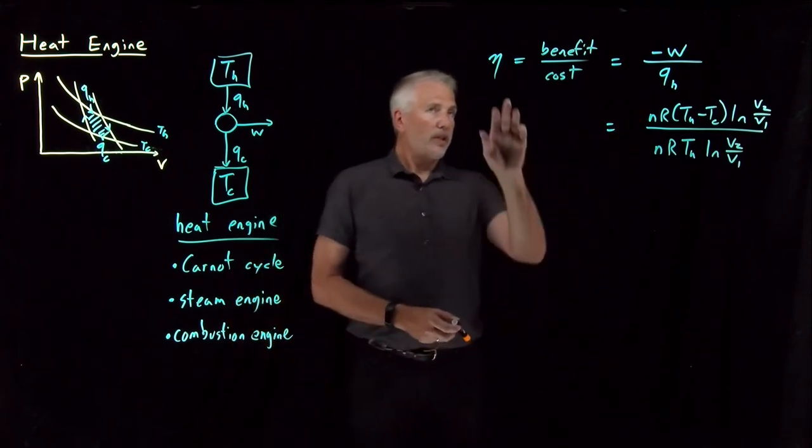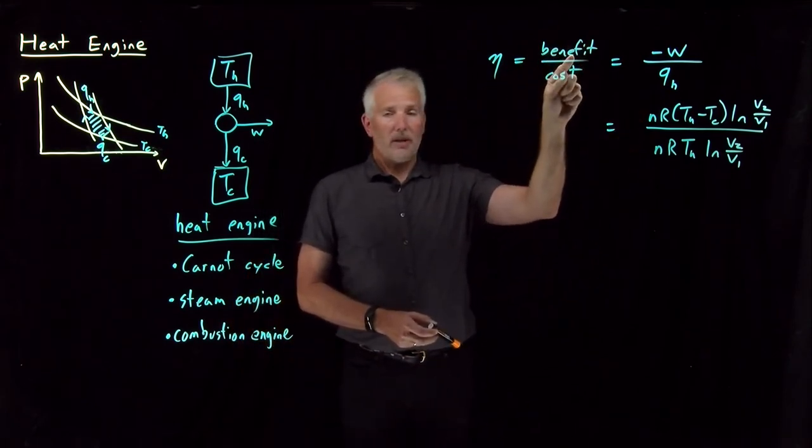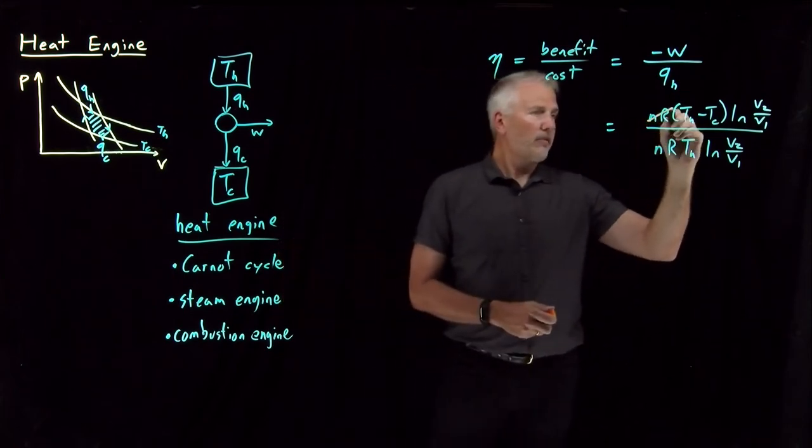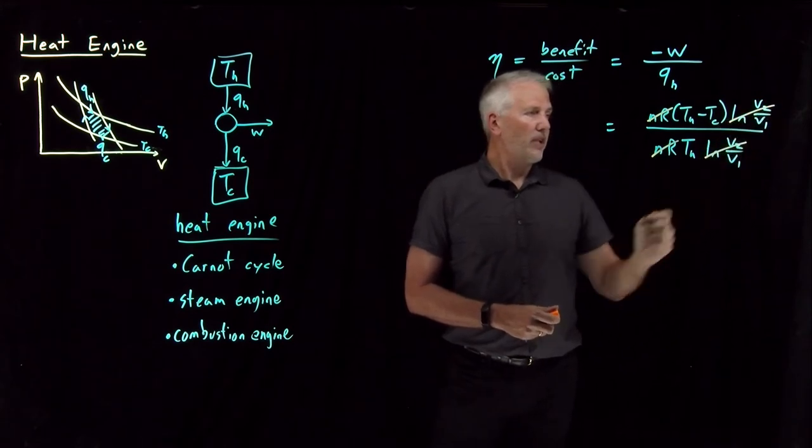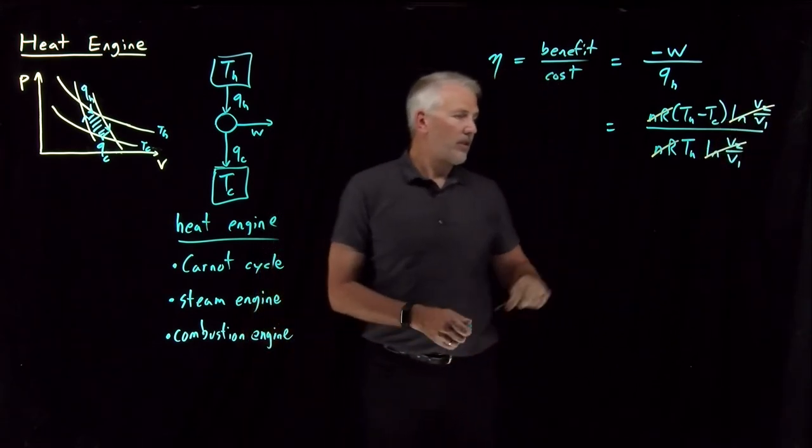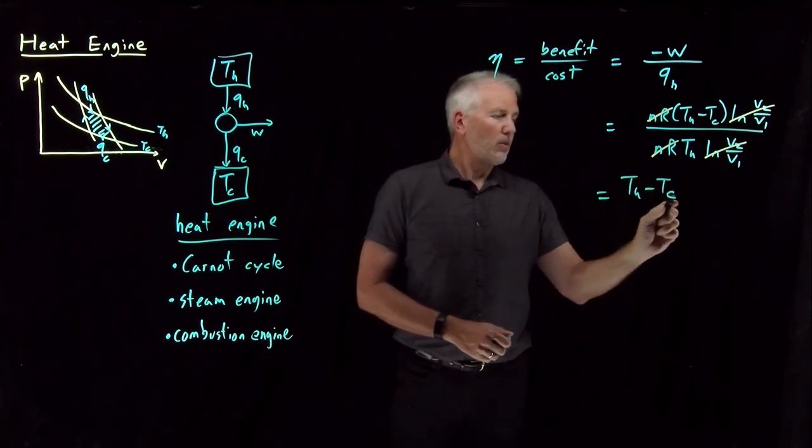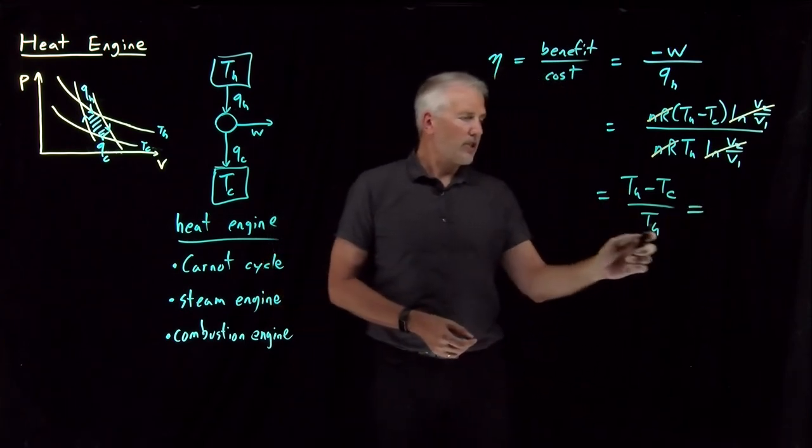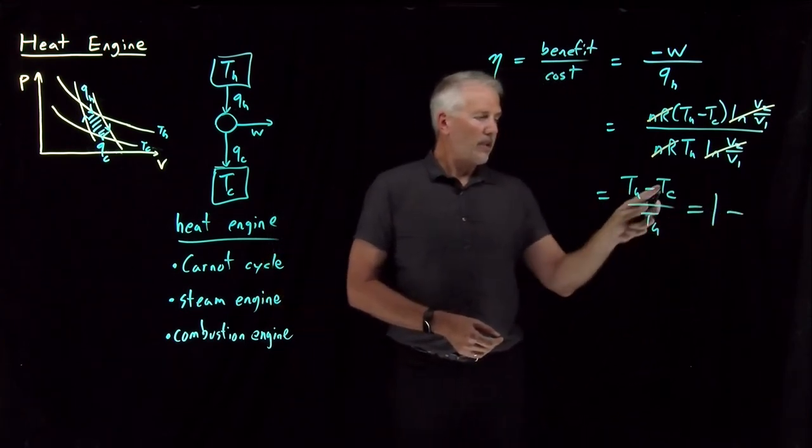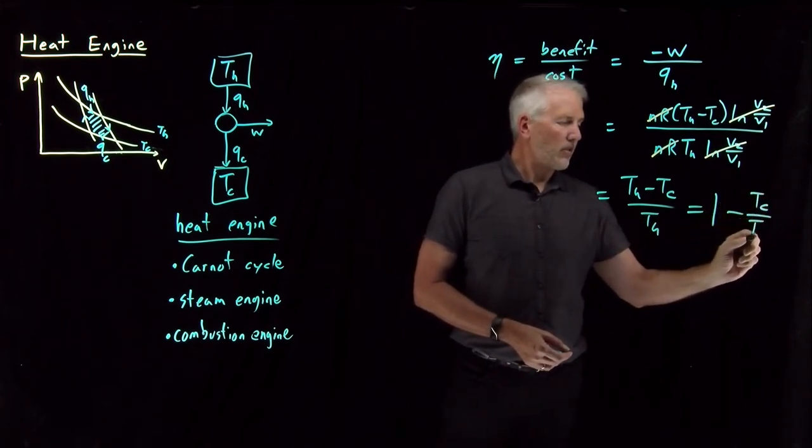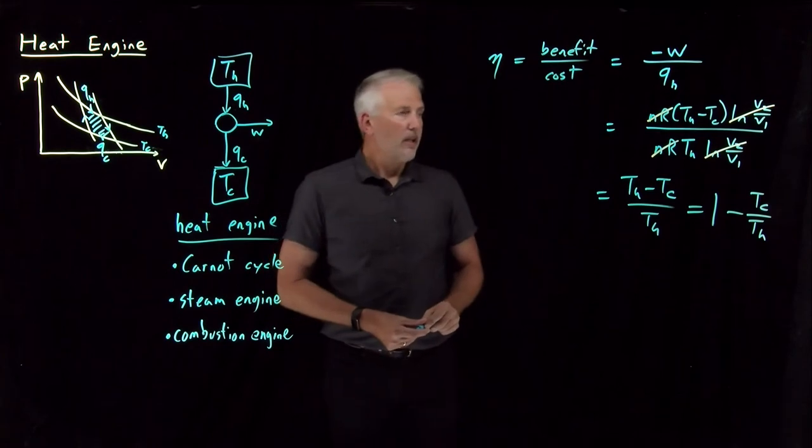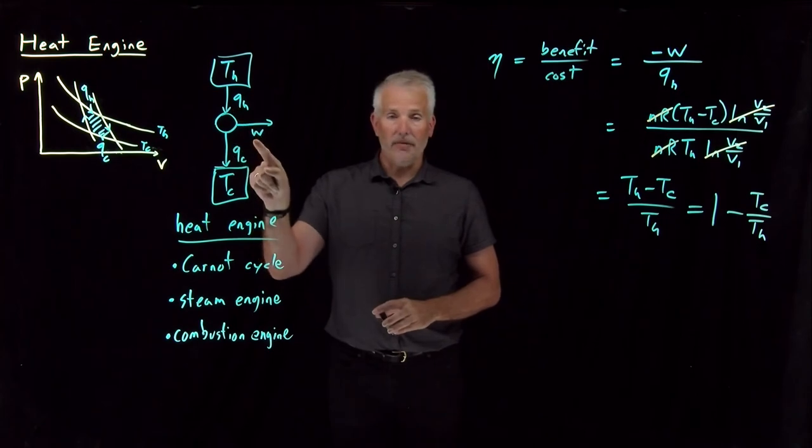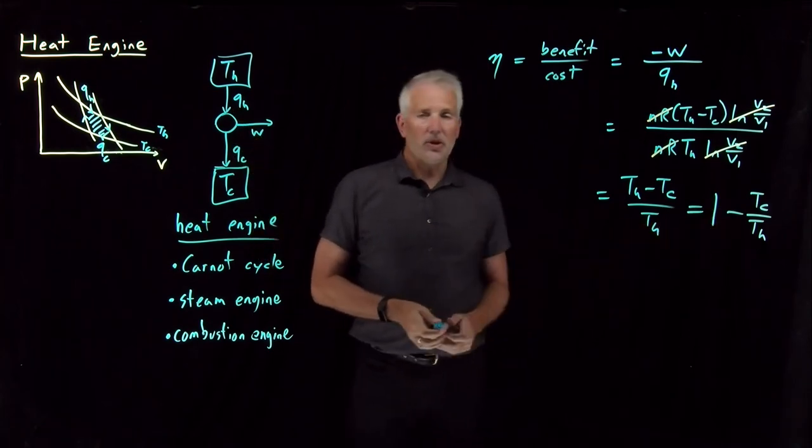So that ratio is our efficiency, how much work we got out of the process relative to the heat it cost us to generate that work. There's a lot of cancellation, the N's and R's cancel, the log terms cancel. So what we're left with is T hot minus T cold over T hot. Or perhaps an easier way to think about that, T hot over T hot is 1, and T cold over T hot, I can't do anything with that one necessarily, so I'll just write that as T cold over T hot. So the efficiency of this process, the fraction of the input heat that I get out in the form of work, is 1 minus this ratio of the temperatures.